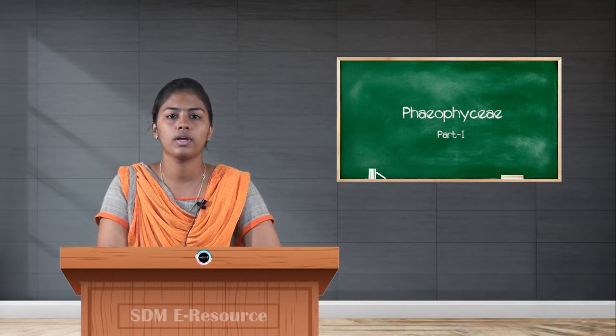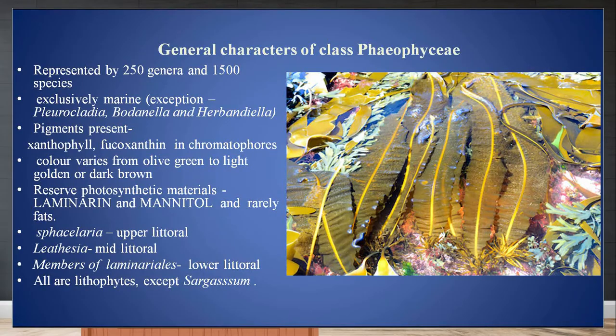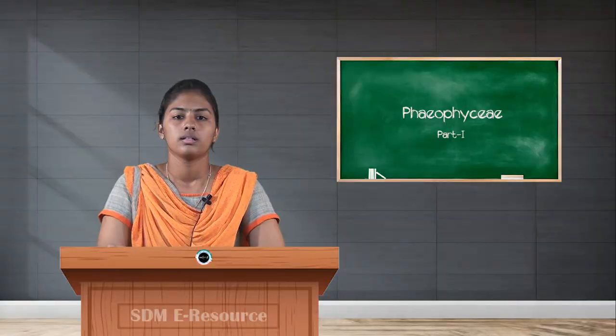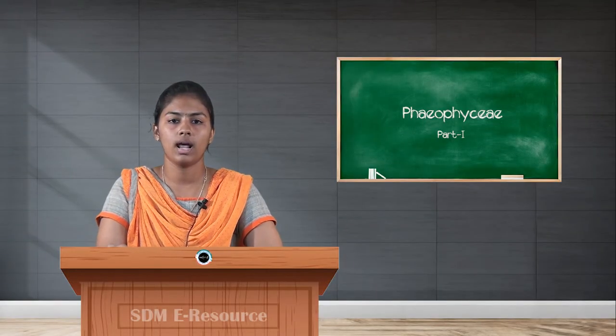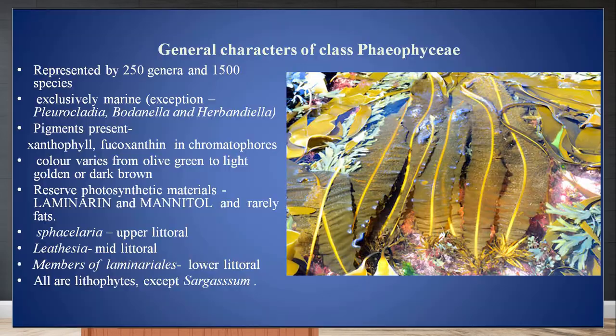This class Phaeophyceae comprises over 250 genera and 1500 species and is mainly found in warmer regions of around 25 to 30 degrees Celsius. The species are mainly marine in nature, but Pleurocladia, Badonella and Herbandiella are found in fresh waters of European countries.